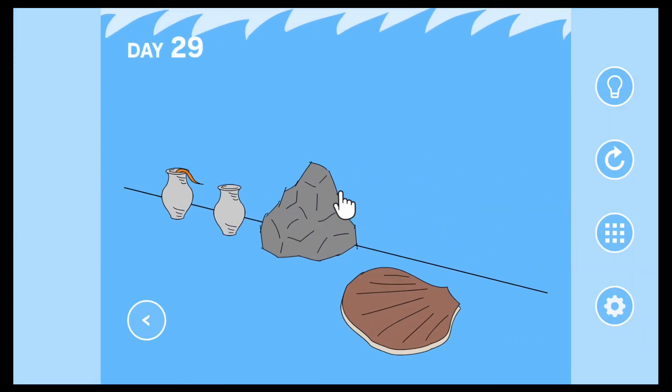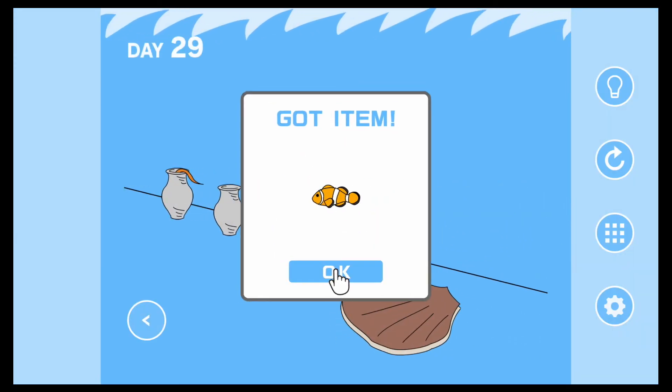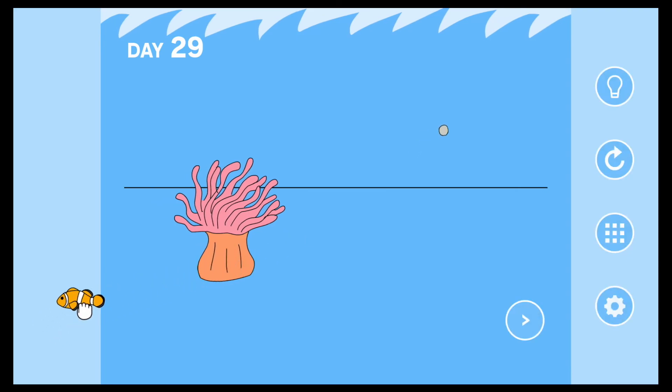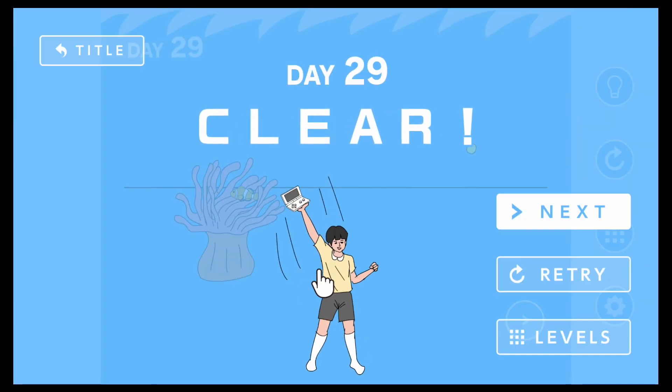Nemo. I need you over here, buddy. Come on. Come on out. Found you. Let's go over here. You're going to go to the sea anemone now. Yes. Yay. You found it. Thank you, Nemo. Hey. Day 29 Clear. Let's go to day 30.